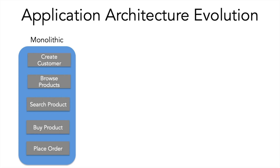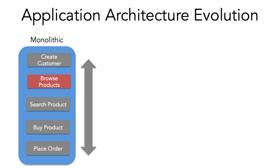Consider an online retail portal with many users browsing products but not using other functionalities. The number of users browsing products might be in the millions, while users creating accounts, buying products, or placing orders might be in the hundreds. In this case you have to scale out to make sure your application doesn't fail. But the only option was to scale the entire application — the entire blue box hosted on a single server — just to scale a single functionality, which doesn't make sense.